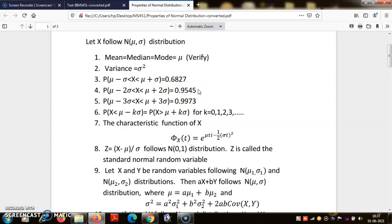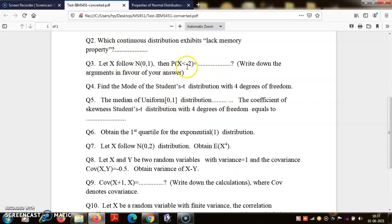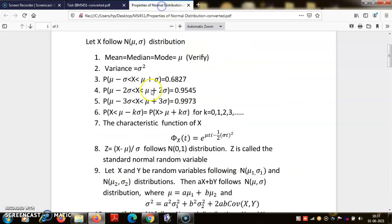And then since normal distribution is symmetric, therefore probability X less than minus two - this will come from this. So you put mu equal to zero, sigma equal to one. So probability X less than minus two will be equal to probability X greater than two. So that would be half of this. Because I am only wanting probability X less than minus two, so that will be one minus this probability divided by two.